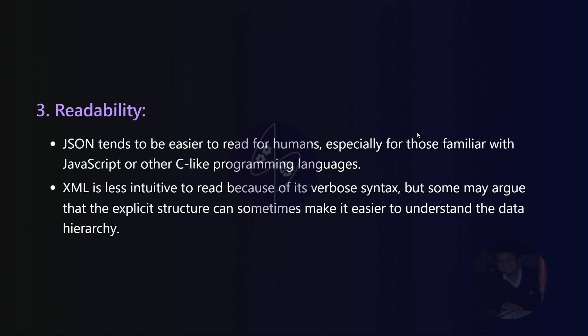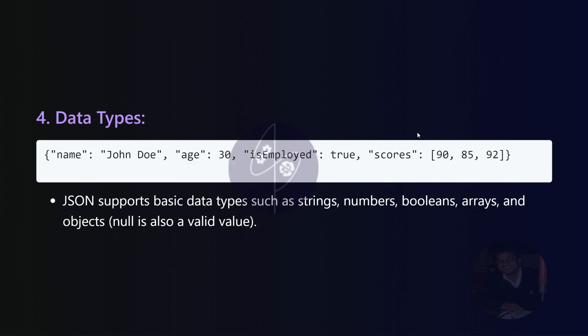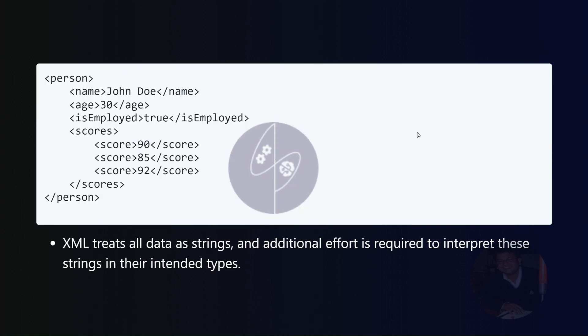Data types. JSON supports diverse data types, including strings, numbers, booleans, arrays, objects, and null. In contrast, XML treats all data as strings, necessitating additional effort for type interpretation.